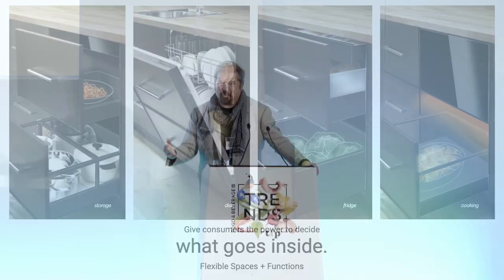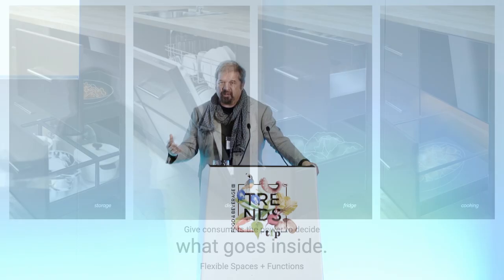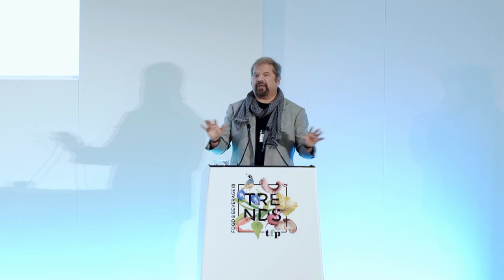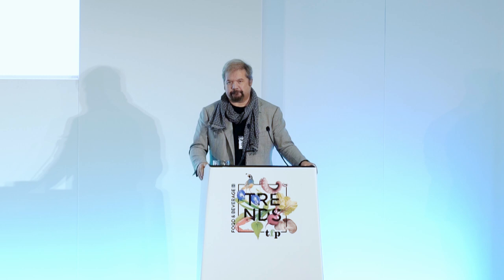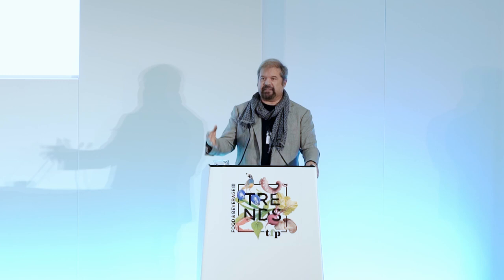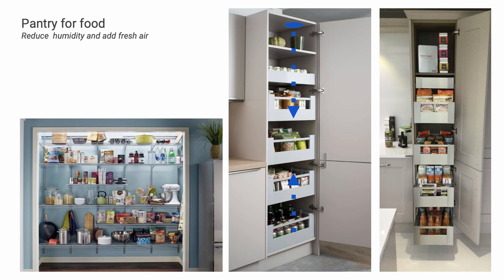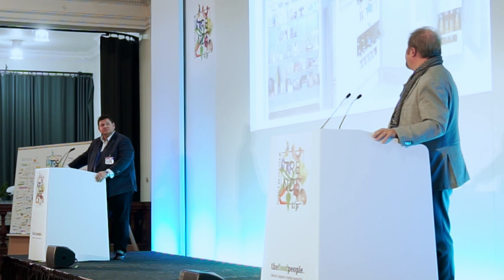I need to find a new level of flexibility that fits the function but also accommodates a certain style. For example, you can see here a very simple piece of furniture that looks like storage, but behind it there is a dishwasher, a fridge, and a cooktop — they all look exactly the same from outside, making management much easier when guests are sitting in your living room. Another interesting project: instead of a huge refrigerator, a cabinet with reduced humidity and fresh air — a pantry where vegetables are better stored than in the fridge.